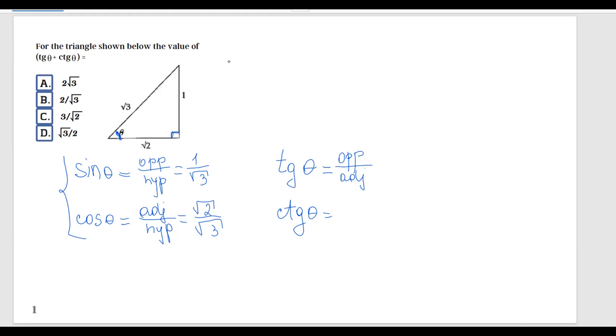And then for cotangent, the formula is adjacent, similar to cosine, over opposite.